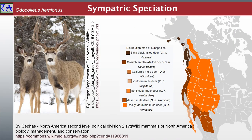The mule deer, Odocoileus hemionus, is a deer indigenous to western North America. It is named for its ears, which are large like those of the mule. Two subspecies of mule deer are grouped into the black-tailed deer group. Unlike the related white-tailed deer, mule deer are only found on the western Great Plains, the Rocky Mountains, the southwest United States, and on the west coast of North America, where they are best known as black-tailed deer subspecies.